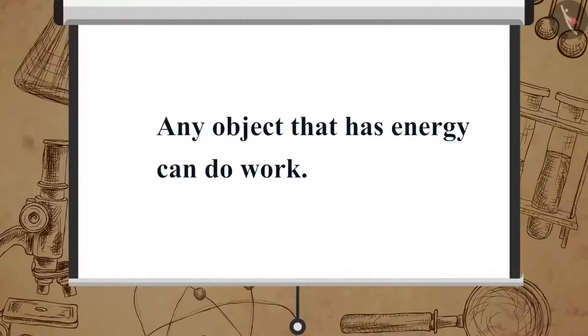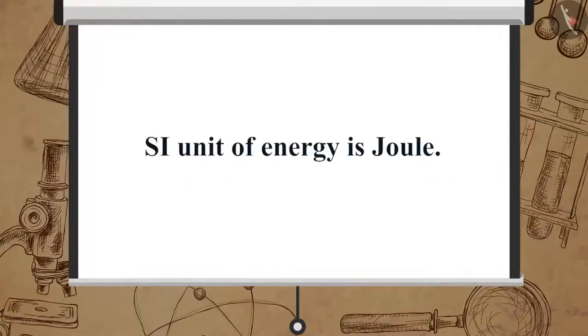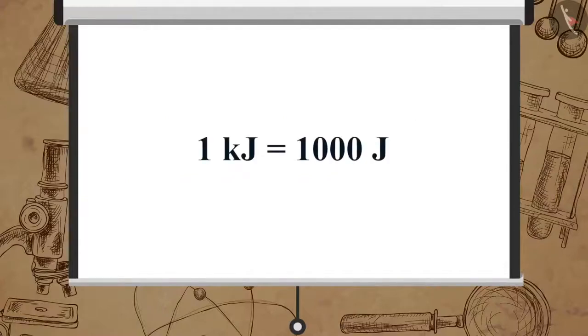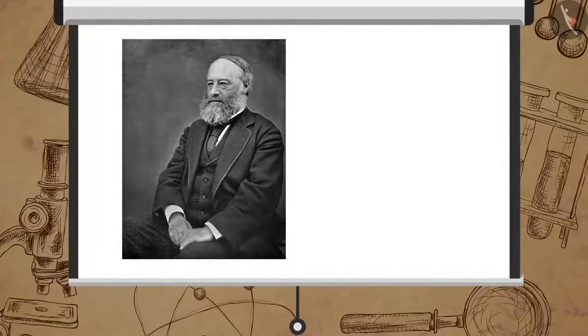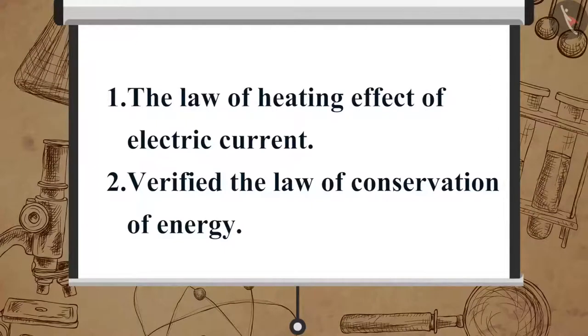Therefore we can see that any object that has energy can do work. Since energy is measured in terms of the capacity to do work, the SI unit of energy is that of work, which is joule. We can say one joule of energy is required to do one joule of work. Energy also has a larger unit, kilojoule: 1 kilojoule equals 1000 joules. The unit of work and energy is named after a British physicist, James Prescott Joule. He formulated the law of heating effect of electric current and verified the law of conservation of energy.